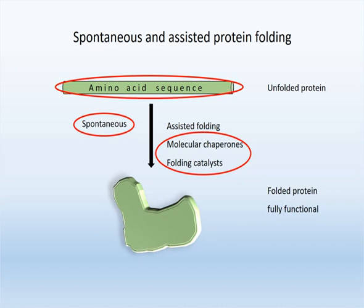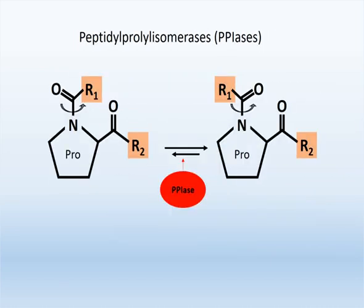Among the folding catalysts, Peptidyl Prolyl Isomerases — PPIases — accelerate the transition between the cis and trans configuration of peptidyl-prolyl bonds. This enzymatic activity could be established in vitro for several proteins, including the family of FK506 binding proteins, the FKBPs.